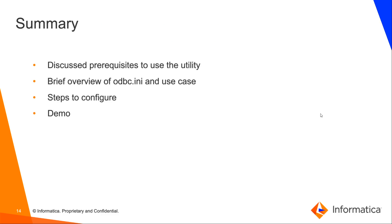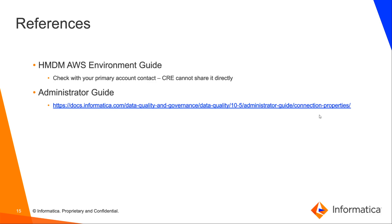In summary, we discussed prerequisites to use the utility, gave a brief overview of ODBC-INI and the use case for the self-service tool, the steps to configure, and gave a demo. You can also get more information in our HMDM AWS environment guide, which is a document shared with the primary contact on your account. You can also see the administrator guide for information on creating connections.